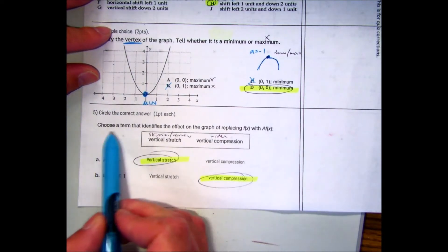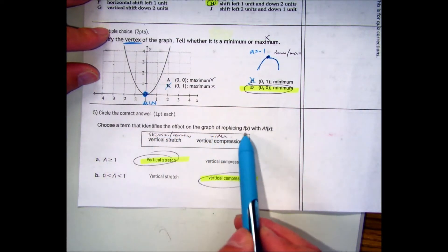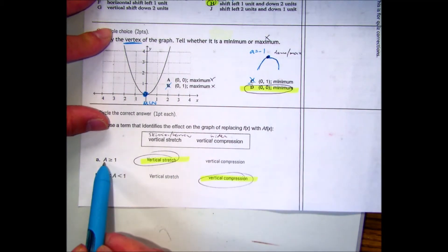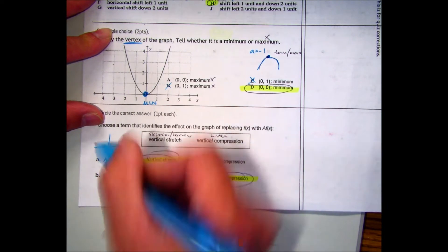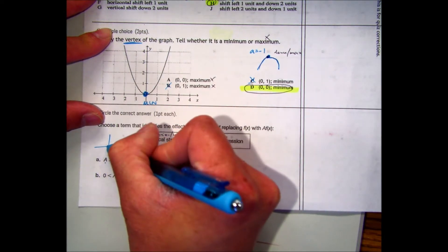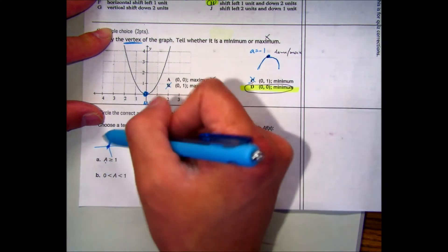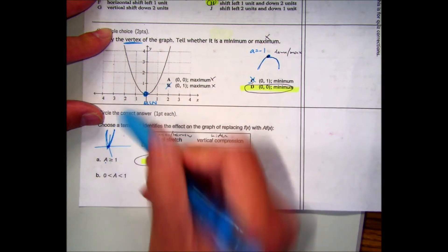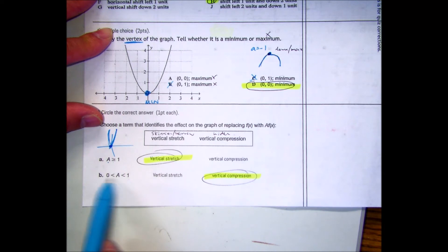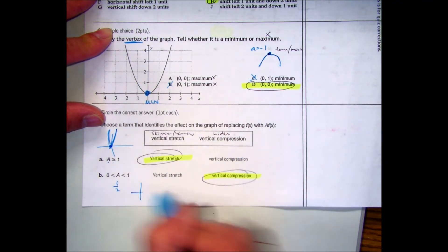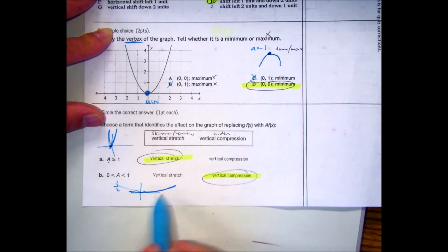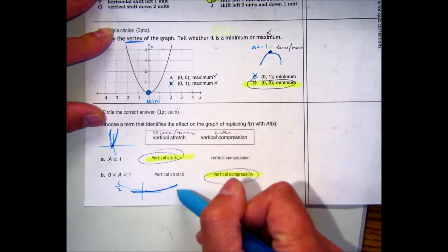Question number 5. Choose a term that identifies the effect on the graph of replacing f with af. When your a value is greater than 1, think about it, it's going to grow faster, right? If I had like 2 to the 5th power, 2x to the 5th power, my money is going to grow up really fast. And because that happens, they call it a stretch away from the x-axis. This means a number between 0 and 1, so like a fraction, like 1 half. My graph is going to be kind of really stretched out there. And when we say compressed, it's compressed this way vertically.